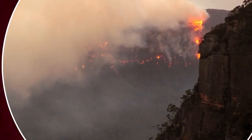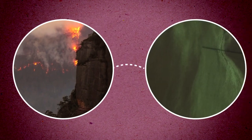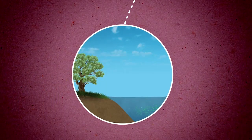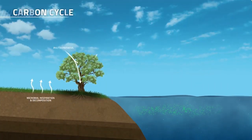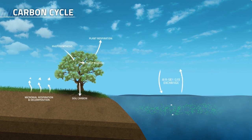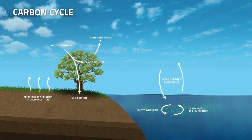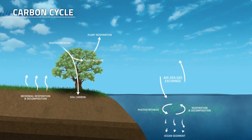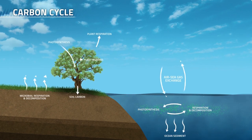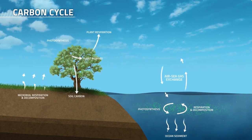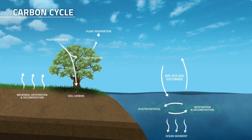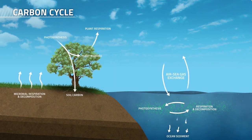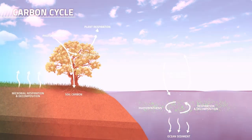Just how are these wildfires and ocean blooms connected? To untangle that, we look to the carbon cycle. The carbon cycle is the flow of carbon between reservoirs in the atmosphere, plants and animals, land and ocean. It's one of the key processes that keeps life sustainable on Earth, and at the heart of all this are land plants and aquatic phytoplankton.